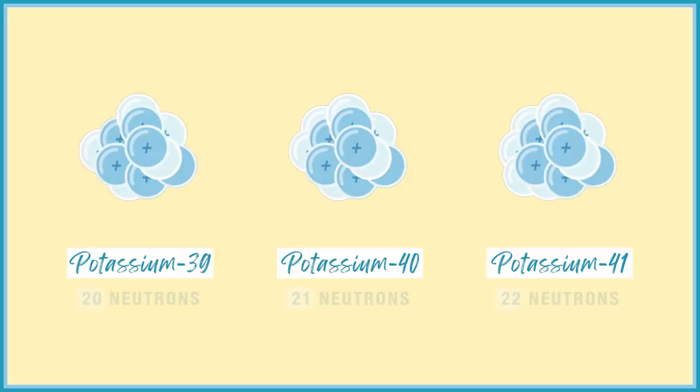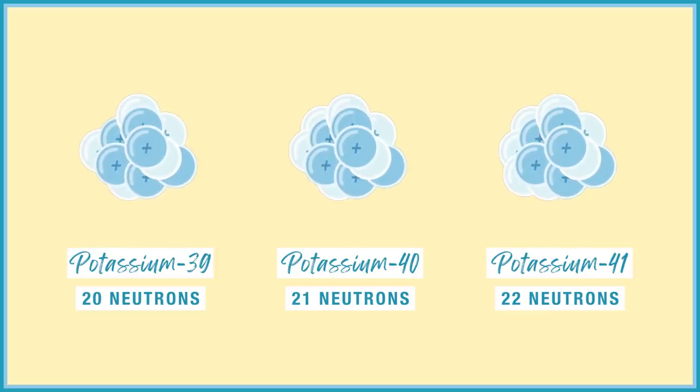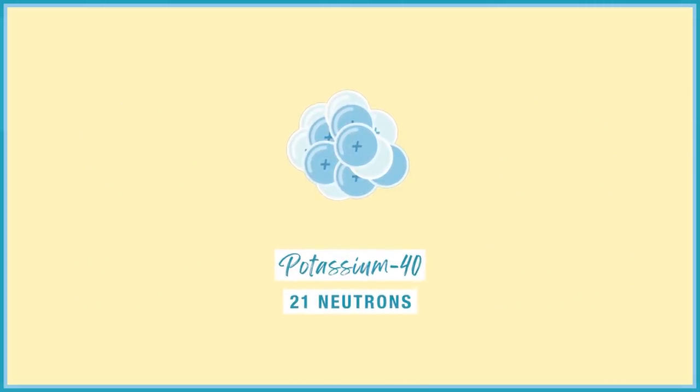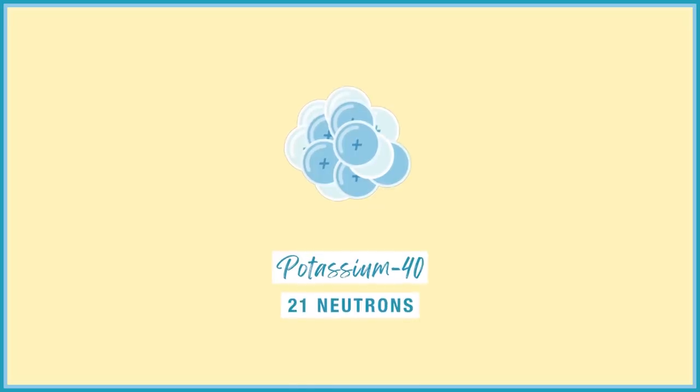Beta decay happens to lots of different elements, and in fact almost all of the neutrinos that are produced on Earth come from beta decay. Bananas, as you might know, contain a lot of potassium. Potassium is an essential mineral used in all sorts of biological processes. Potassium actually exists in three main isotopes — with the same number of protons but different numbers of neutrons — potassium-39, 40, and 41. Potassium-39 and 41 are stable, but potassium-40 is unstable and undergoes beta decay.